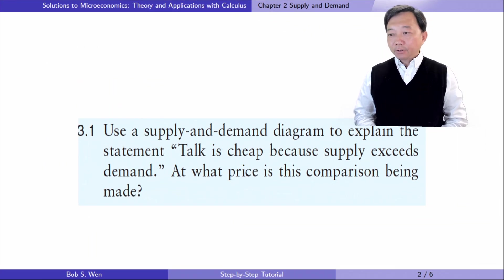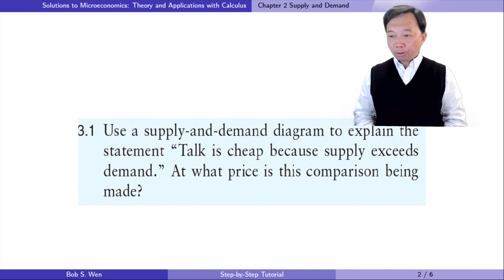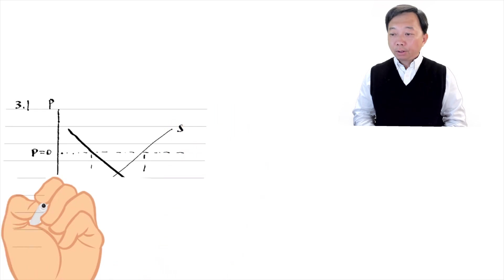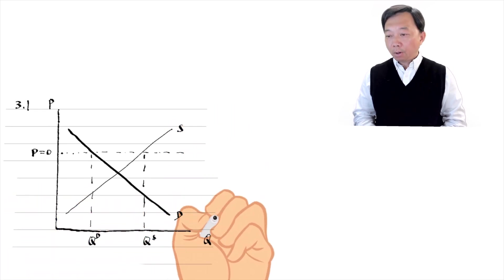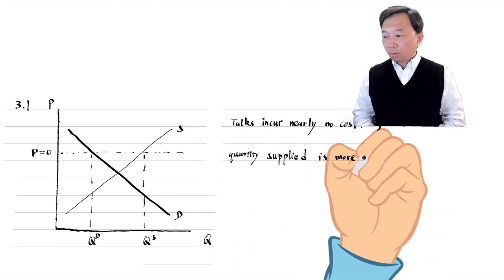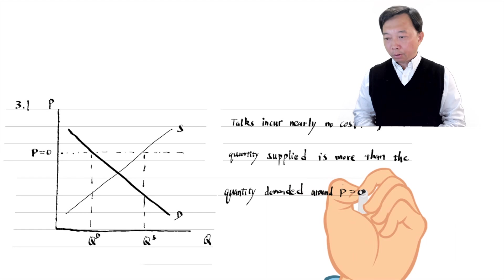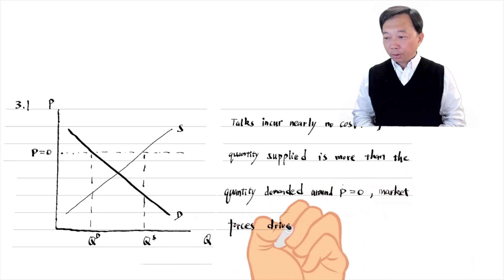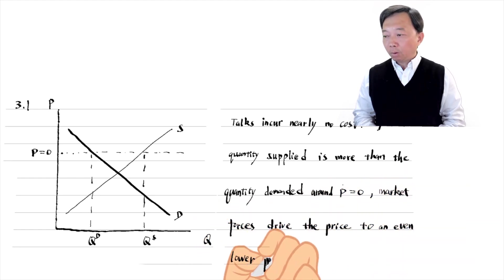Here's exercise 3.1. Use a supply and demand diagram to explain the statement: talk is cheap because supply exceeds demand. At what price is this comparison being made? Talks incur nearly no cost. If the quantity supplied is more than the quantity demanded around the price of zero, the market forces drive the price to an even lower price. So talks are cheap.